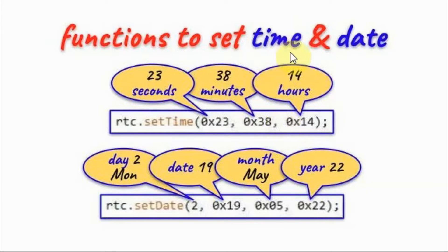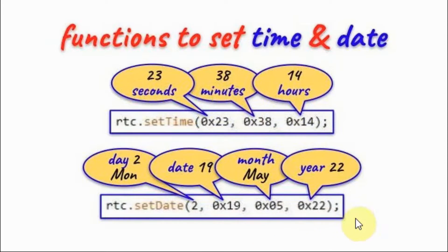Now we look at the functions available within the library. We have functions to set time and date. Function set_time has three arguments: the first to set seconds, the second argument for the minutes, and the third argument to set the hours. Function set_date has four arguments: the first is to set the day, which has a value from 1 to 7, where 1 is Sunday, 2 is Monday, and so on. The second argument sets the date, the third sets the month.